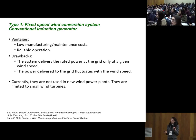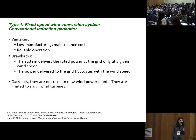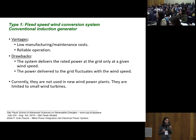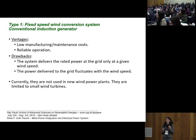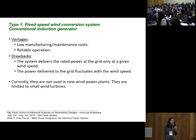The advantages of fixed speed wind conversion systems are low manufacturing and maintenance costs and reliable operation. The drawbacks are that the system delivers rated power only at one specific wind speed, and the power delivered to the grid fluctuates with wind speed, which is a significant problem for power systems. Currently they are not used in new wind power plants and are limited to small or medium-sized wind turbines.